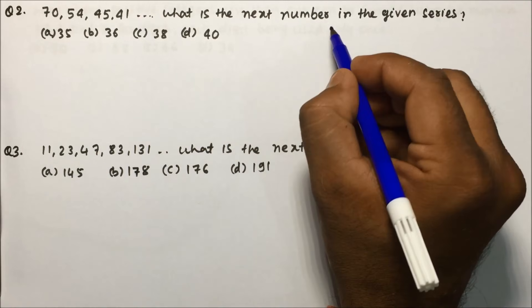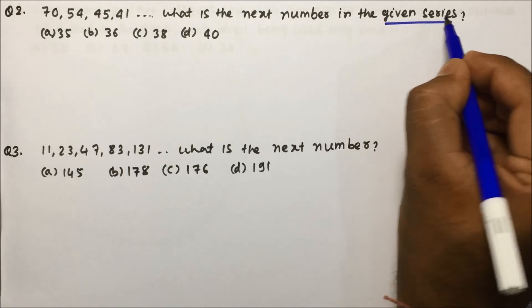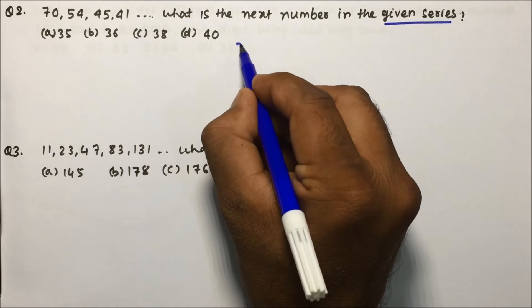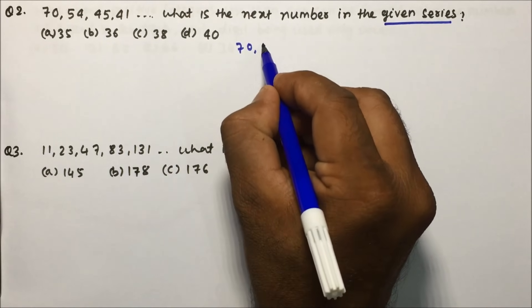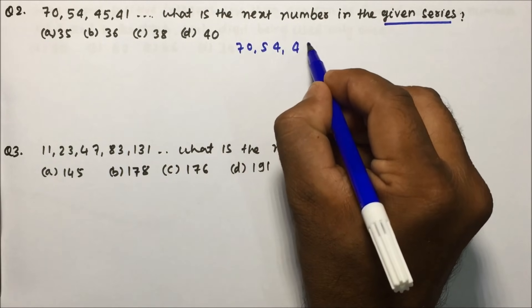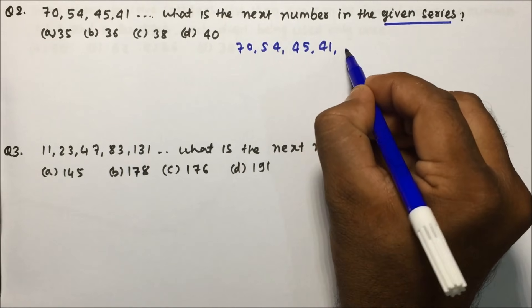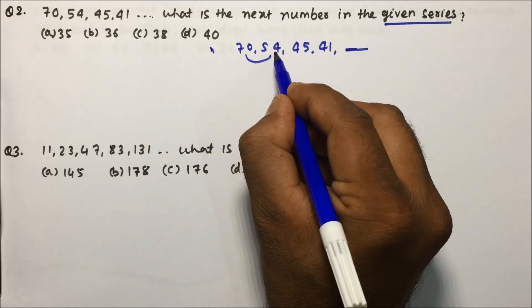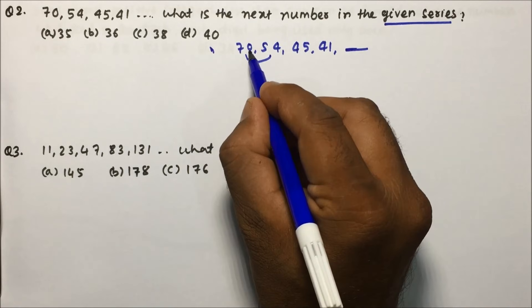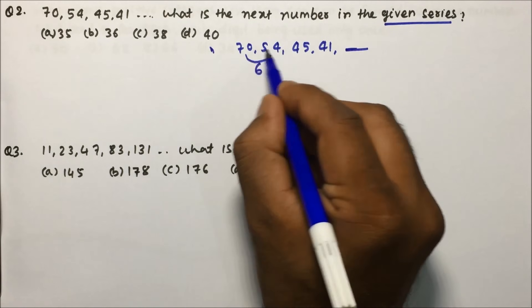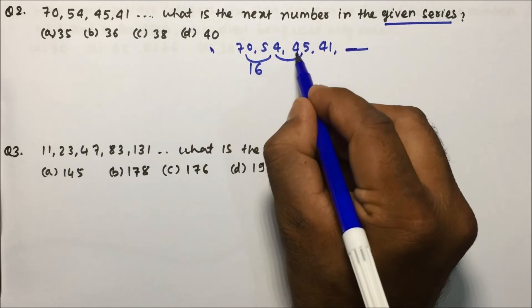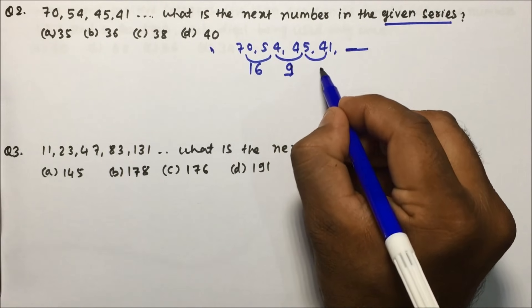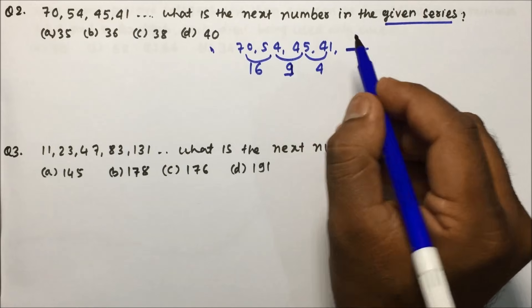Question number two: what is the next number in the given series? The series is 70, 54, 45, 41 — find the next number. If you look at the differences: 70 minus 54 is 16, 54 minus 45 is 9, 45 minus 41 is 4.